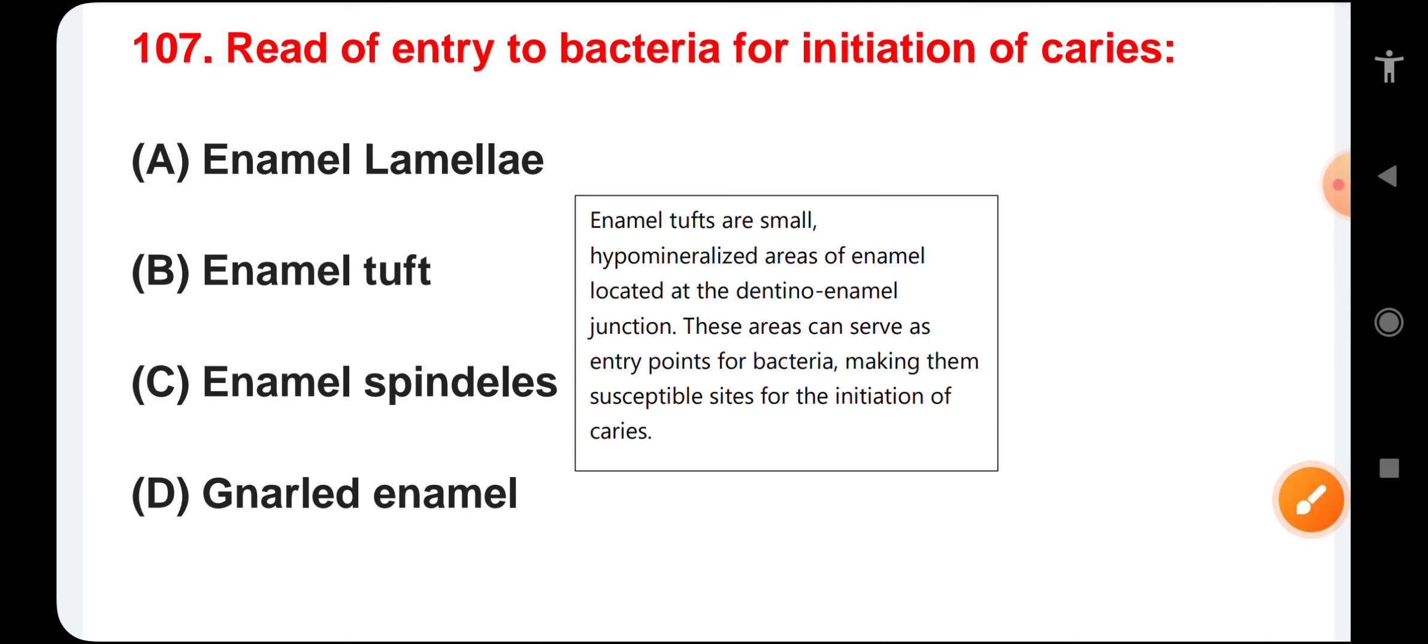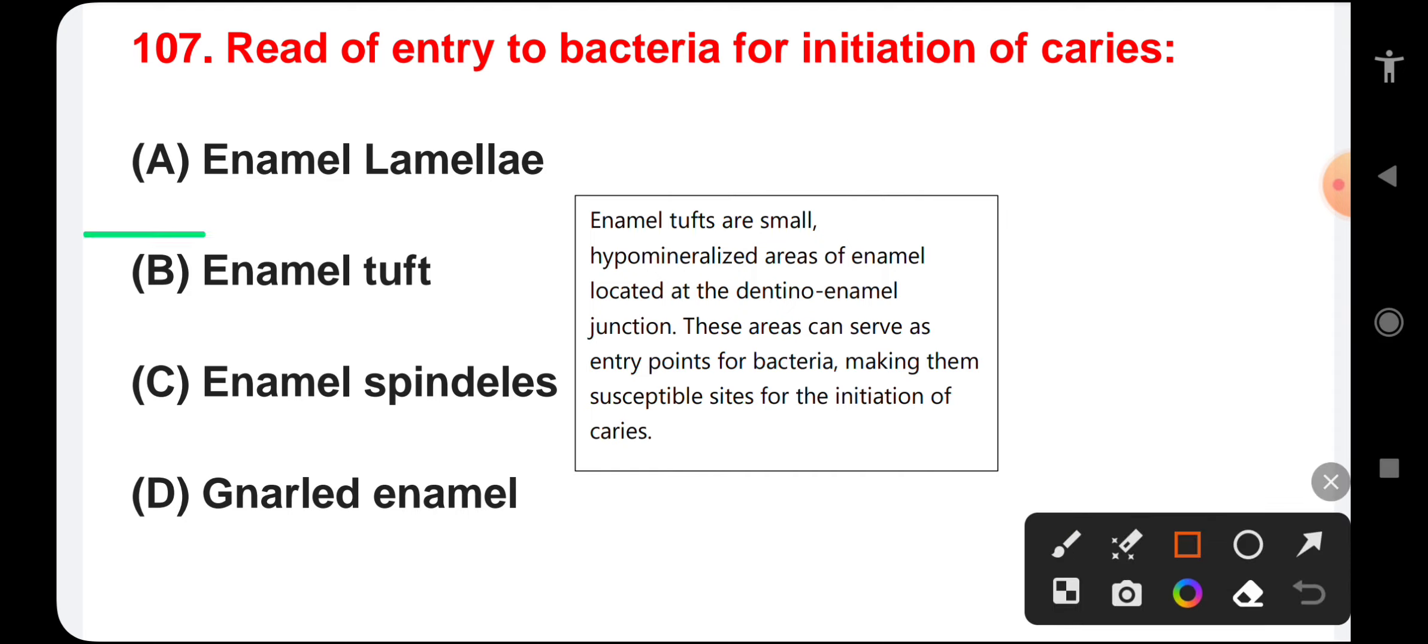Ready entry to bacteria for initiation of caries: enamel lamellae, enamel tufts, enamel spindles, or gnarled enamel. Enamel tufts are small hypomineralized areas of enamel located at the dentinoenamel junction. This area is an entry point for bacteria and makes them a susceptible site for initiation of caries. The correct answer is enamel tufts.